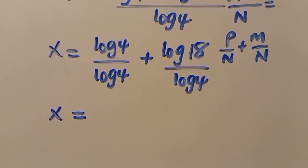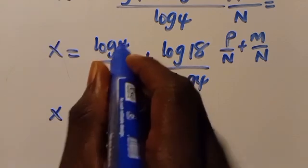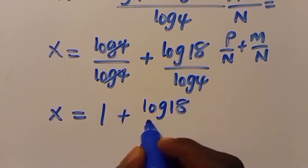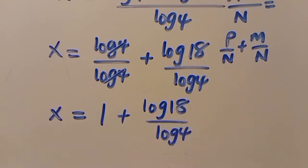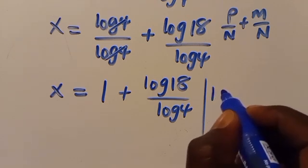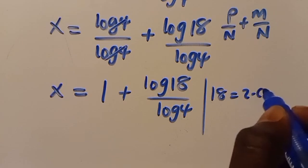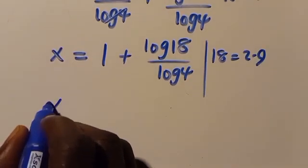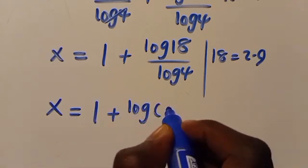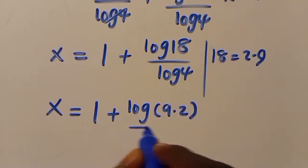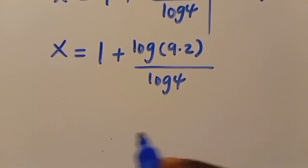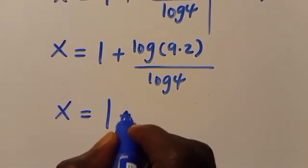So x equals 1 plus log 18 over log 4, since log 4 over log 4 equals 1. We can also express 18 as the product of 2 times 9, so we have x equals 1 plus log(9 times 2) over log 4.